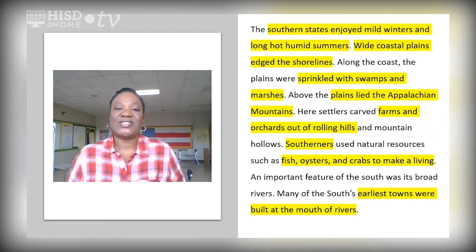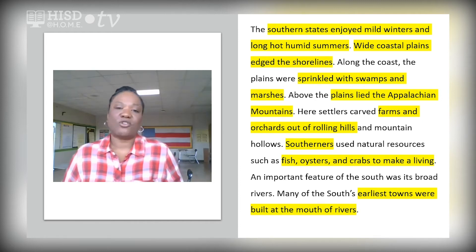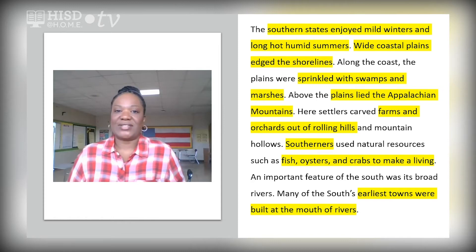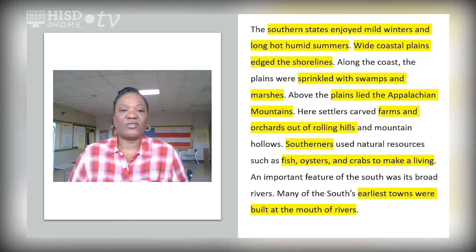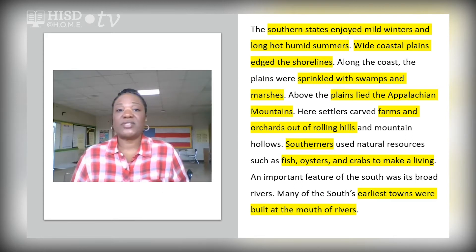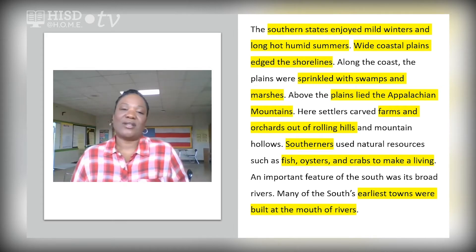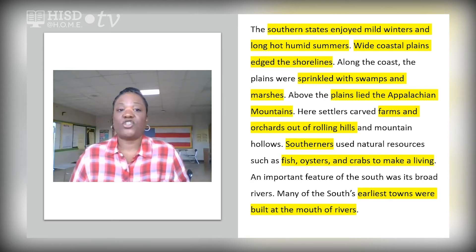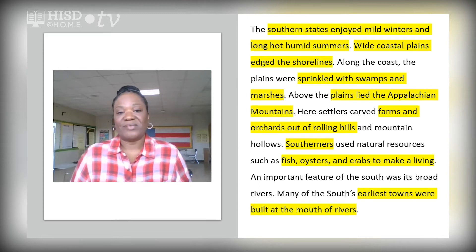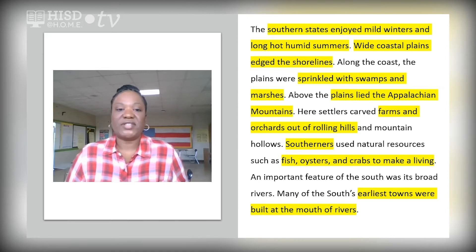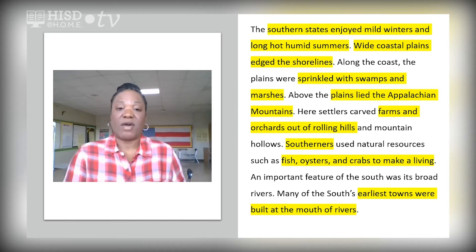The Southern states enjoyed mild winters and long, hot summers. Wide coastal plains edged the shorelines, and along the coast the plains were sprinkled with swamps and marshes. Above the plains lie the Appalachian Mountains, where settlers carved farms and orchards out of rolling hills and mountain hollows. Southerners used natural resources such as fish, oysters, and crabs to make a living. An important feature of the South was its broad rivers — many of the South's earliest towns were built at the mouth of rivers.